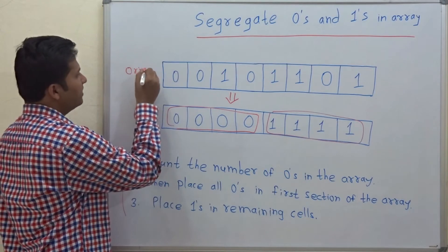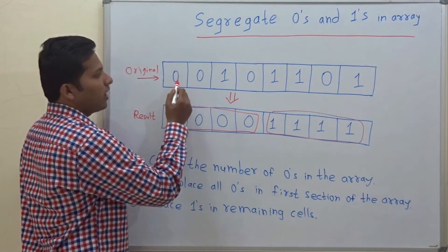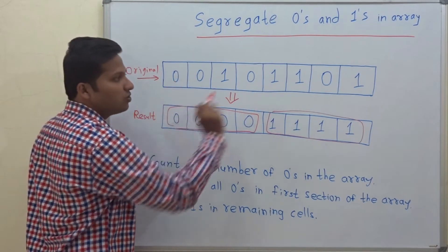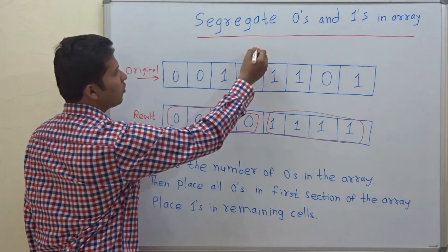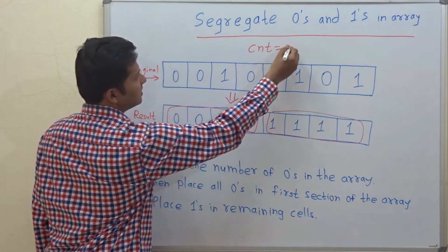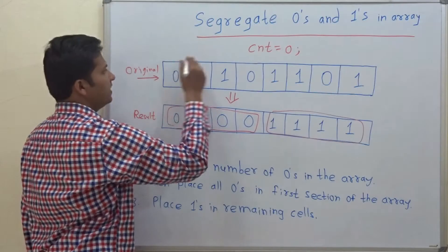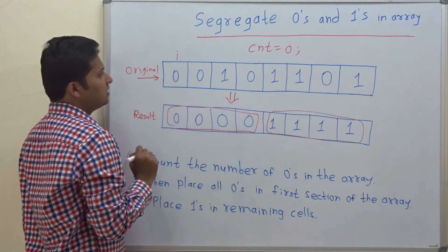So this is the original array. You have to count the number of zeros. So for counting the number of zeros you have to initialize a variable, cnt is equal to 0 for example, and then you have to start from index 0.